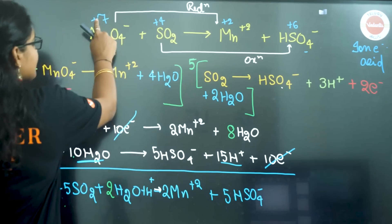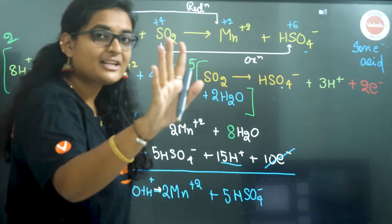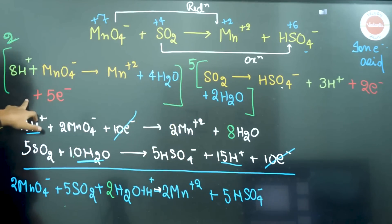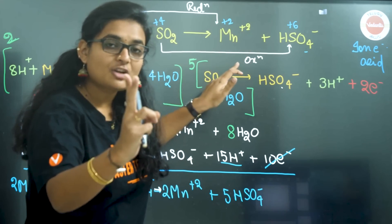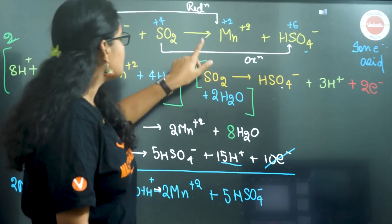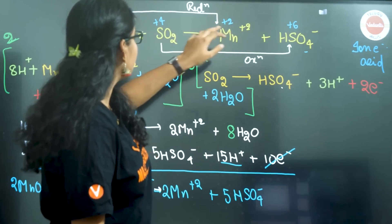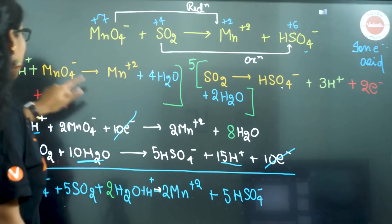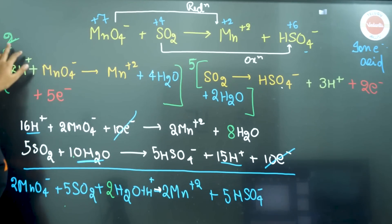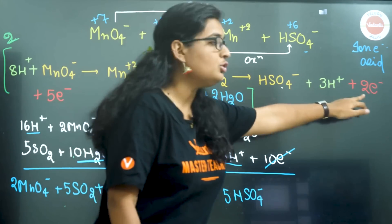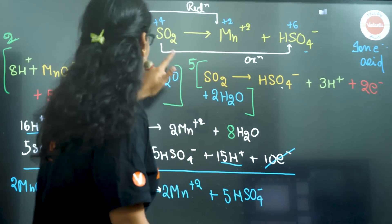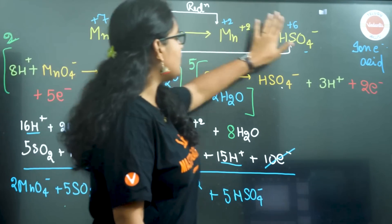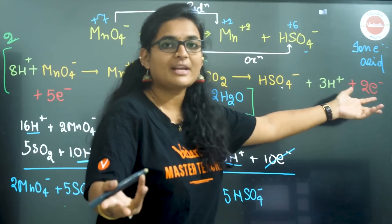Electrons balance. For reduction: Mn goes from +7 to +2 — a difference of 5 electrons, so add 5 electrons on the left. For oxidation: S goes from +4 to +6 — a difference of 2 electrons, so add 2 electrons on the right. Now equalize: to match 5 and 2, take LCM = 10. Multiply the reduction equation by 2 and the oxidation equation by 5.